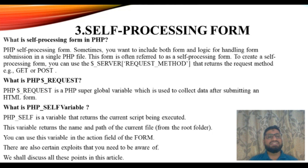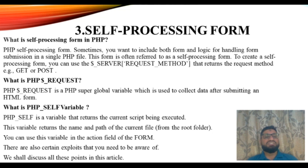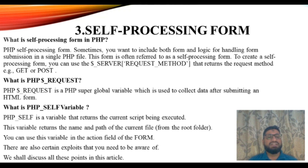To create a self-processing form you can use the $_SERVER['REQUEST_METHOD'] variable, which returns the request method — for example, GET or POST. The $_REQUEST method is a PHP super global variable used to collect data after submitting an HTML form. PHP_SELF is a variable that returns the current script being executed — it returns the name and path of the current file from the root folder, and you can use it in the action field of the form.